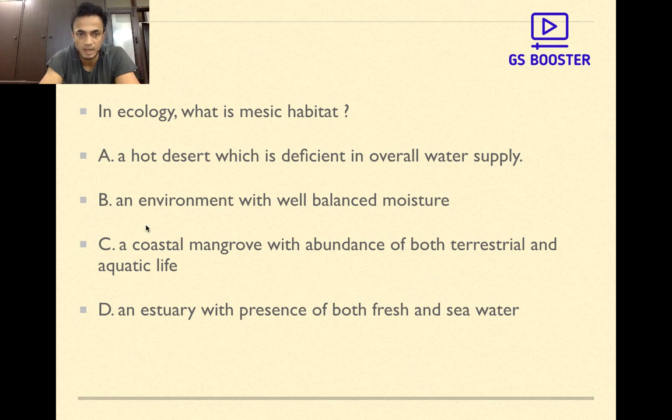an environment with a well-balanced moisture, a coastal mangrove with abundance of both terrestrial and aquatic life, and estuary with presence of both fresh and sea water. The answer here is an environment with a well-balanced moisture. Greater the moisture content, greater is the mesic character of a habitat. This is a factual question.